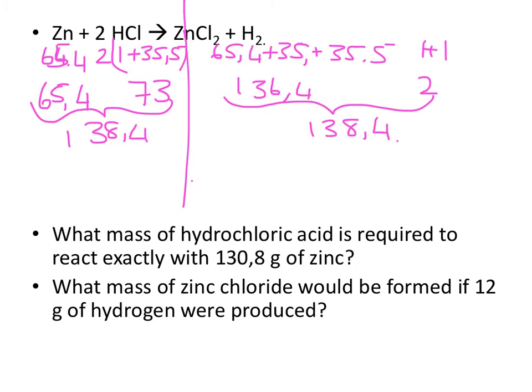So, what mass of hydrochloric acid is required to react exactly with 130.8 grams of zinc? So, I'm taking that and I'm going to make it 130.8, and that is exactly times by 2, so I'm going to take the 73, multiply that by 2, and I land up with 146 grams.